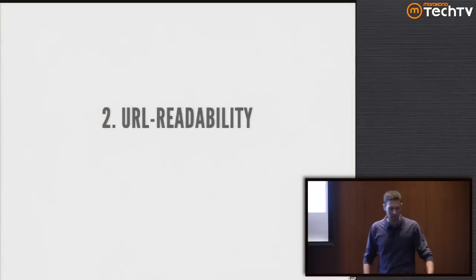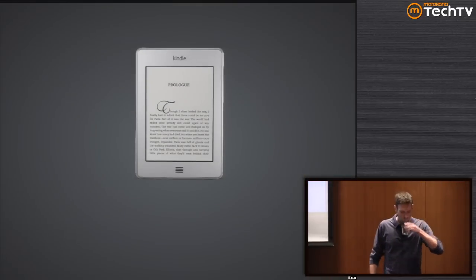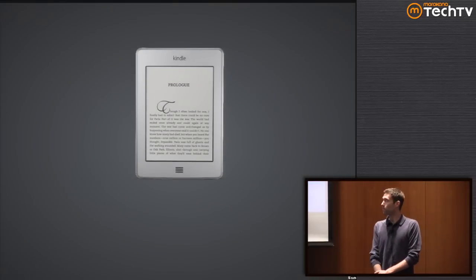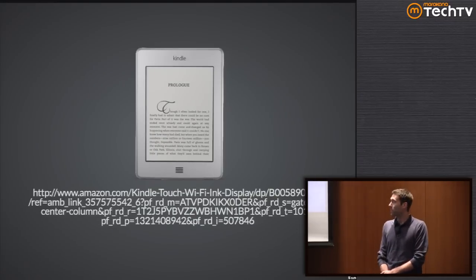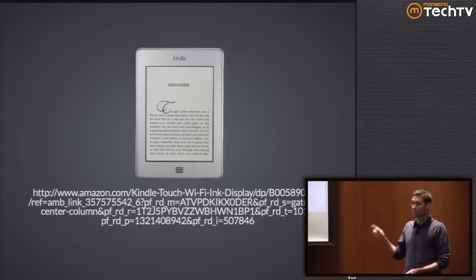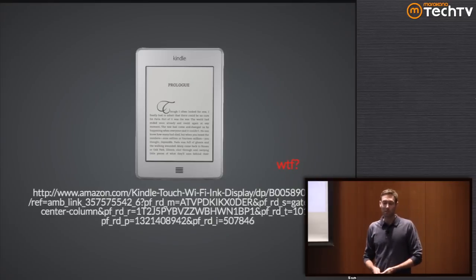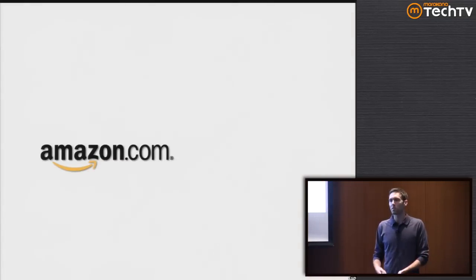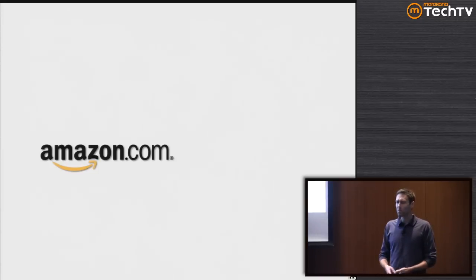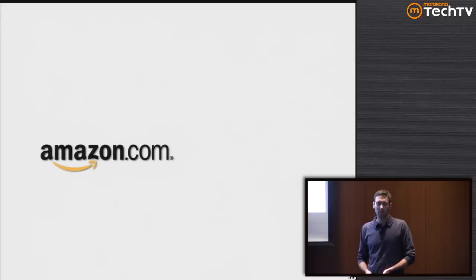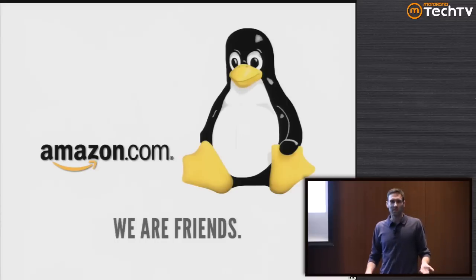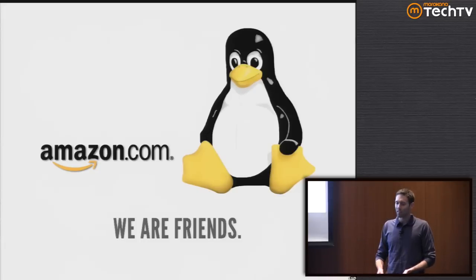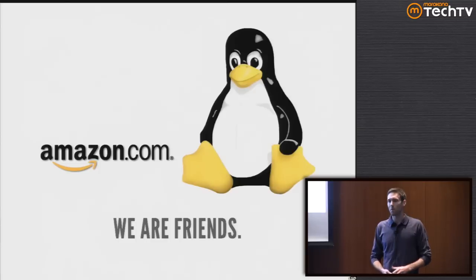Moving on to number two - URL readability. To buy a product, you might have to go to a link with an enormous, cluttered URL. There are only three reasons I would click such a link if someone sent it to me in an email: it came from Amazon, which is a trusted source; I use Linux and I'm pretty fearless; or maybe we're friends and I trust you. But even so, if your friend's email was hacked, you can never be sure - because that URL is just full of junk.